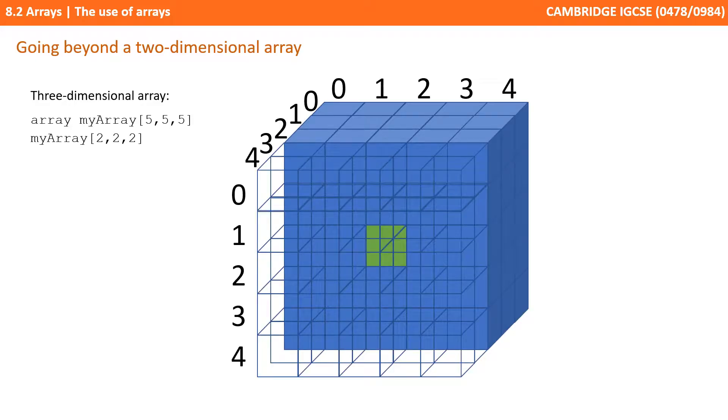If we wanted to access a given element of this three-dimensional array, we would supply three indexes. In our visualisation, one for the height, one for the width and one to the depth inside this cube.